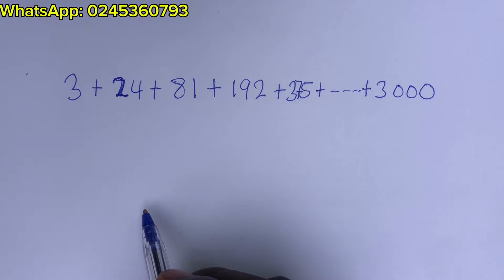We've been given 3 plus 24 plus 81 plus 192 plus 375 plus up to plus 3000. So what is the value of this?